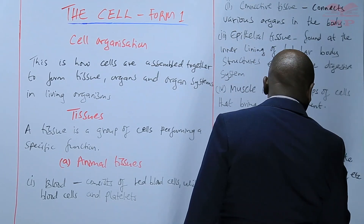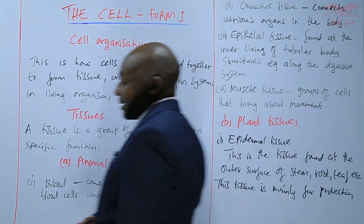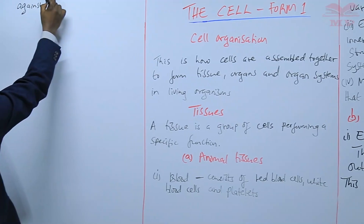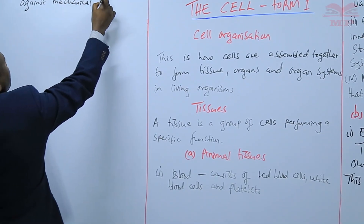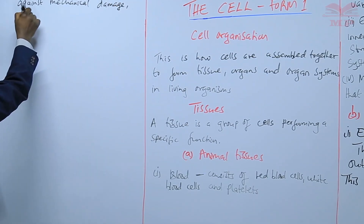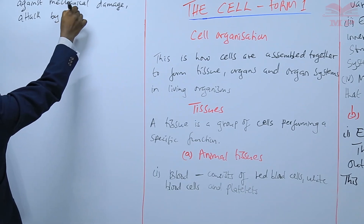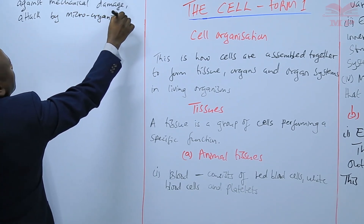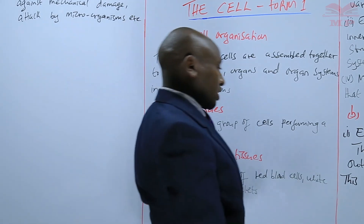Epidermal tissue is mainly for protection — against mechanical damage and attack by microorganisms. So basically, epidermal tissue is for protection.